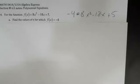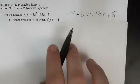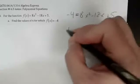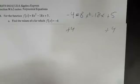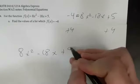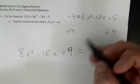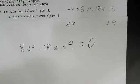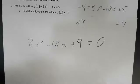Always remember — set one side equal to zero first. To do that here, I add four to both sides. I like to put the equation on the left side. So I get 8x squared minus 18x plus five plus four equals zero, which simplifies to 8x squared minus 18x plus nine equals zero. Now I have zeroed out one side. Equation on the left, zero on the right.